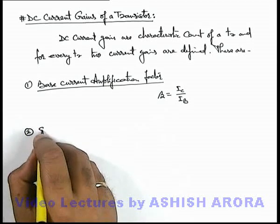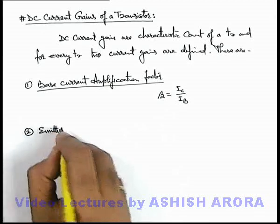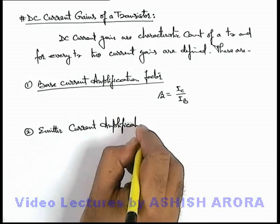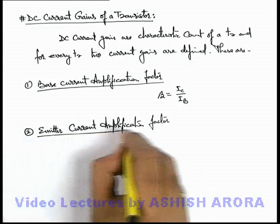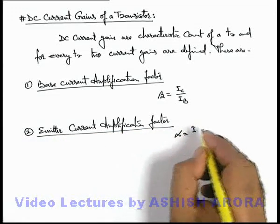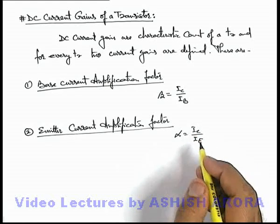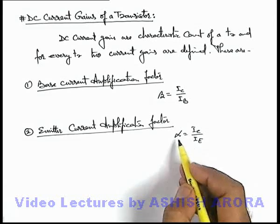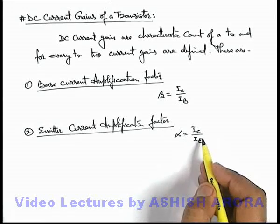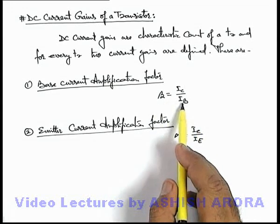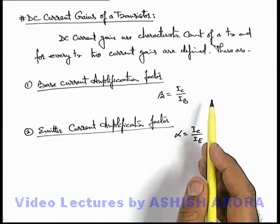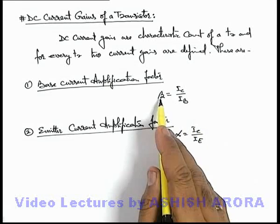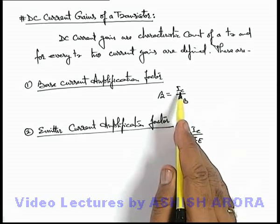The second current gain is called the emitter current amplification factor, and it is denoted by the symbol alpha, which is given as the ratio of collector current to emitter current. As we already discussed, collector current is slightly less than emitter current because base current is very small, so the value of alpha is slightly less than 1. Whereas the value of beta is quite large, since I_B is very small compared to I_C.